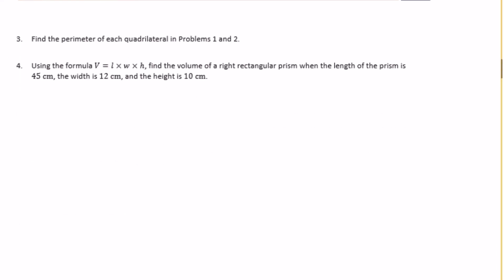And then the last one, number four, using the formula volume equals length times width times height, find the volume of a right rectangular prism when the length is forty-five centimeters, the width is twelve, and the height is ten. So the volume would be equal to forty-five centimeters times twelve centimeters times ten centimeters.